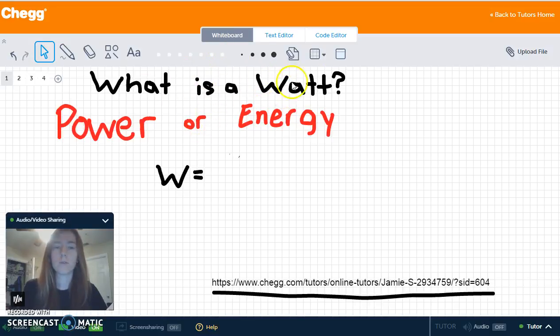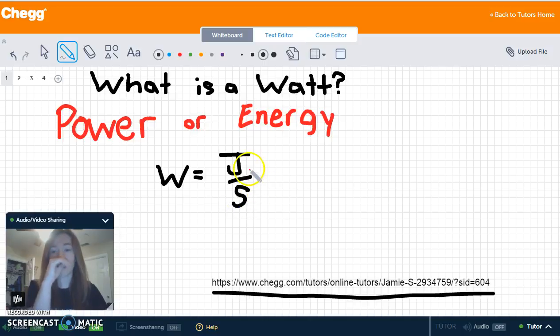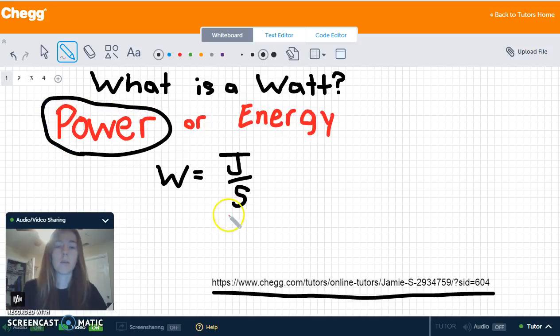So the common misconception for watts is, is it a unit of power or a unit of energy? And those are totally different things. So a watt is equal to joules per second. Joules is a measure of energy, so power is actually a measure of energy per time. So watts in this case is the unit of power and not of energy. It's divided by a unit of time, so how much energy do you have per time is your power.